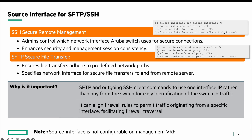Similarly, for SFTP, the command is: IP source-interface SFTP, followed by the interface ID or the IP address. You can also include the VRF name as part of the command.